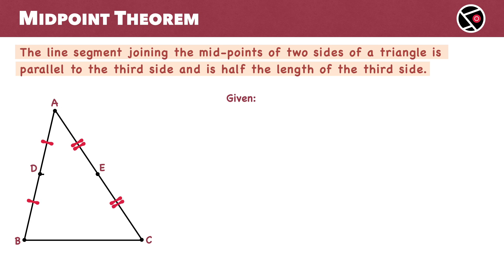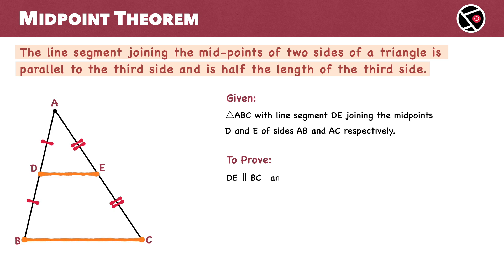Line segment DE connects points D and E. So, we have triangle ABC with line segment DE joining the midpoints D and E of AB and AC respectively. We need to prove that DE is parallel to BC and that DE is half the length of BC.